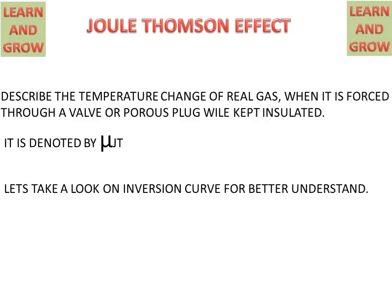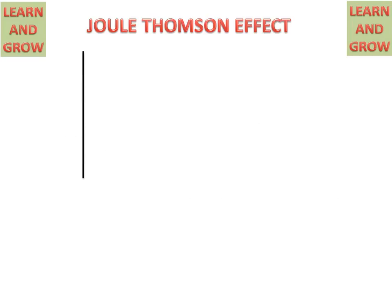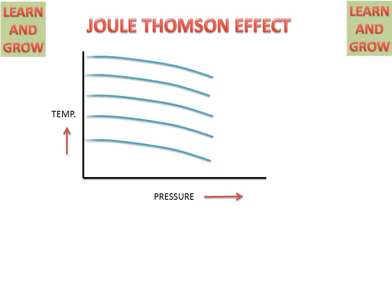Let's take a look at the inversion curve for a better understanding of the Joule-Thomson effect. We have a graph between temperature and pressure, with temperature on the vertical axis and pressure on the horizontal axis. There are also iso-enthalpic curves, along which enthalpy remains constant.